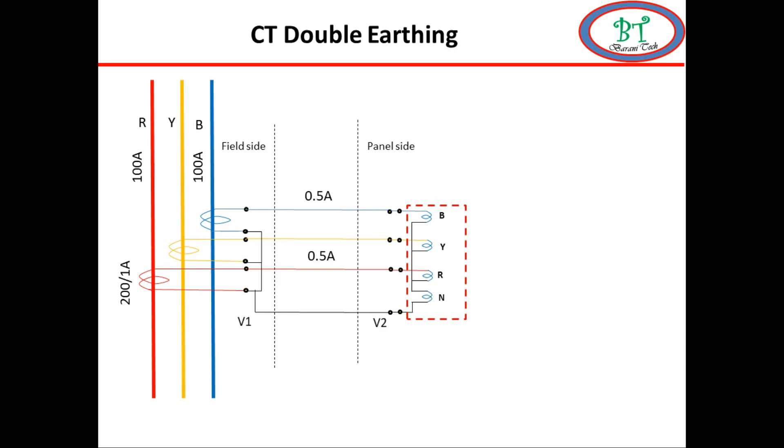Let us consider the Y phase have overload. And the current going up to 110 amps. And the earth fault settings for this relay is 0.1 amps.